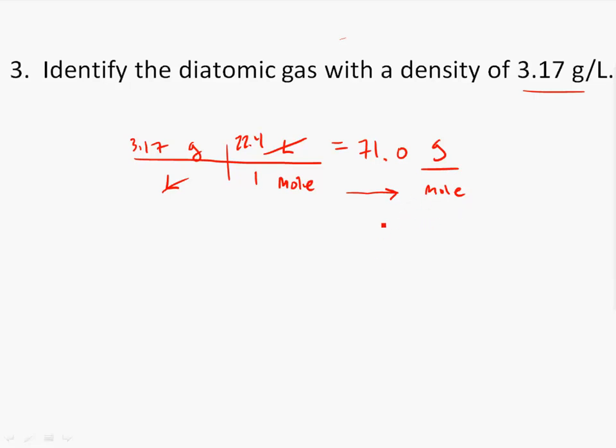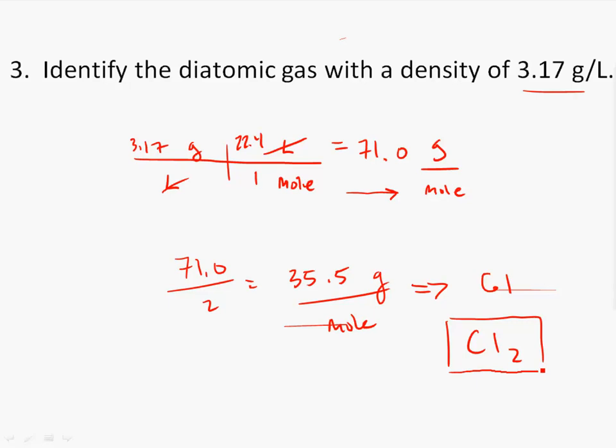Now, this is the molar mass of our diatomic gas. So if it's 2 atoms, you have to divide 71.0 by 2. And that's going to bring us to like 35.5 grams per mole. Look that up. You'll find that that comes out being chlorine. So our molecule is indeed Cl2.